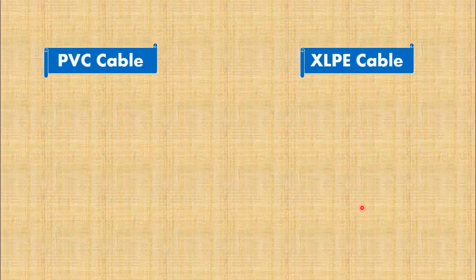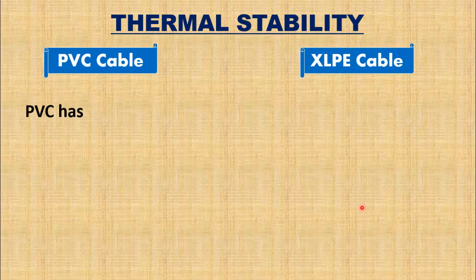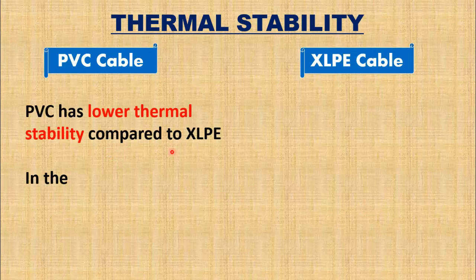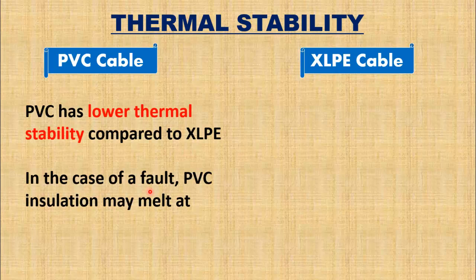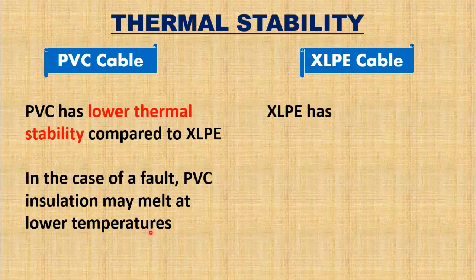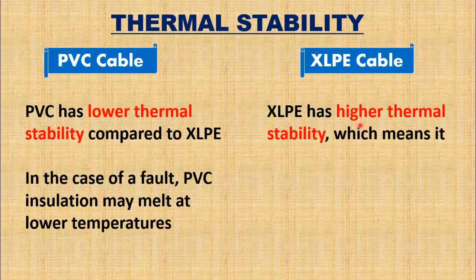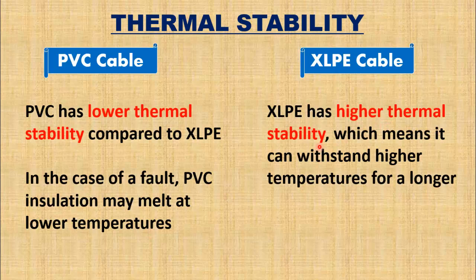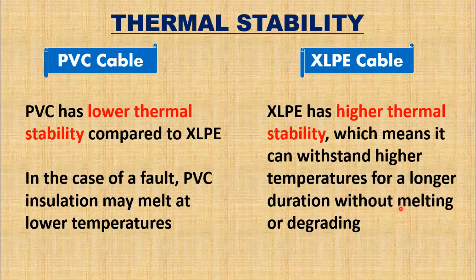Another difference is based on thermal stability. PVC has lower thermal stability compared to XLPE. In the case of an overload fault, PVC insulation may melt at lower temperatures. XLPE has higher thermal stability, which means this cable can withstand higher temperatures for a longer duration without melting or degrading.